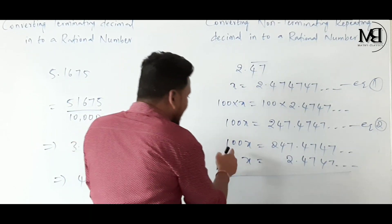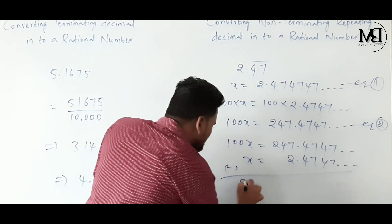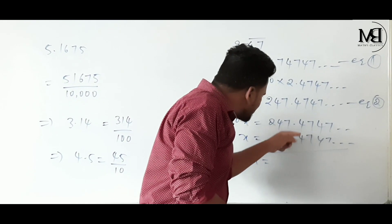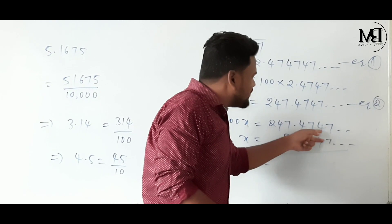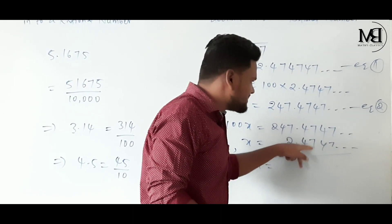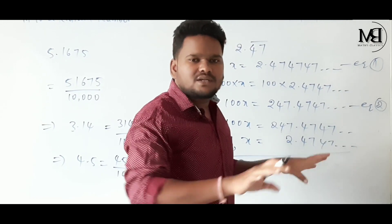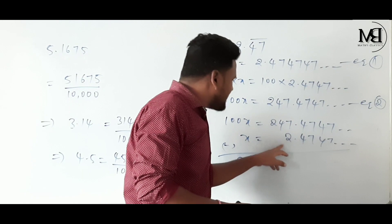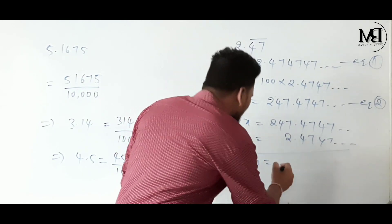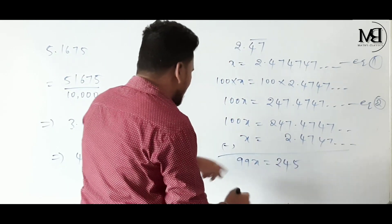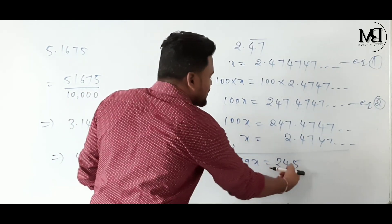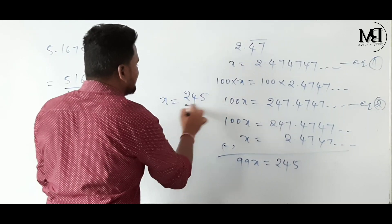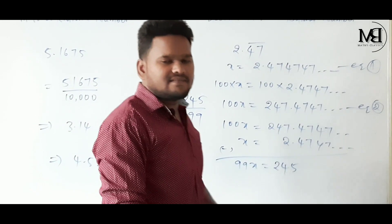100X minus X = 99X. Subtracting the decimal parts: 7−7=0, 4−4=0, and so on — the decimal part becomes 0. The whole part: 247 minus 2 = 245. So 99X = 245, and X = 245 by 99. That is the conversion.